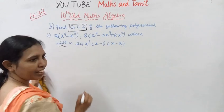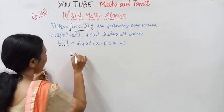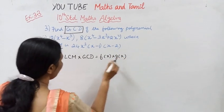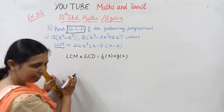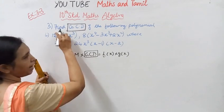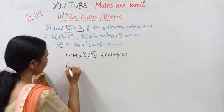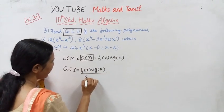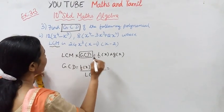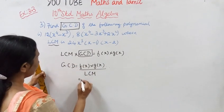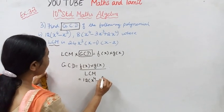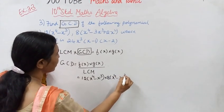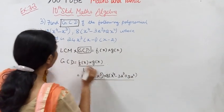GCD formula: GCD equals f(x) into g(x) divided by LCM. We are given: 12x⁴ minus x³, and 8x⁴ minus 3x³ plus 2x², divided by LCM.